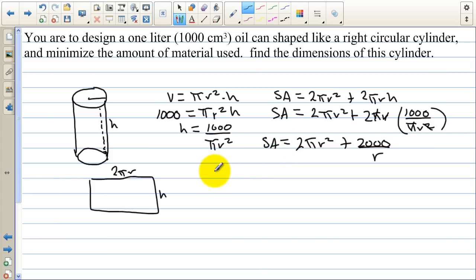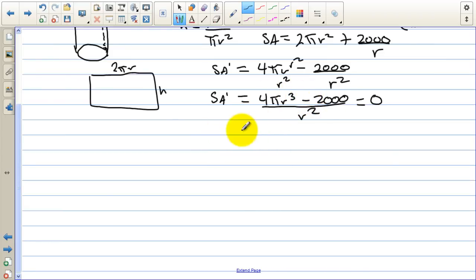Now we want to minimize this function. So we're going to take the derivative of the surface area function. And so we have 4 pi r minus 2,000 over r squared. So we have surface area is the derivative. We need a common denominator. So I'm going to multiply this side by r squared over the top and the bottom. So we have 4 pi r to the third minus 2,000 all over r squared. And then we need to set this equal to zero. And we need to make a fraction zero. The top has to be zero. So we have 4 pi r cubed minus 2,000. We want that to be equal to zero.